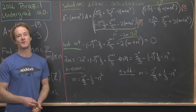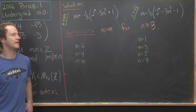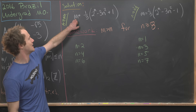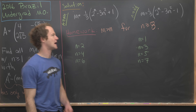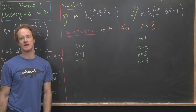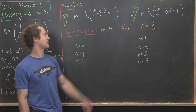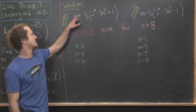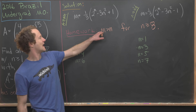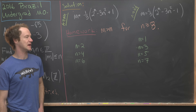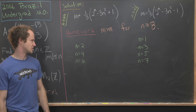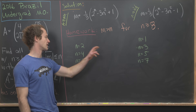Now we're ready to finish. Note that the 2ⁿ term grows much faster than the n² term, so for large n, |m| will exceed n, violating our constraint. As a homework exercise: show that |m| > n for n ≥ 8 in both the even and odd cases. This leaves only n = 1, 2, 3, 4, 5, 6, 7 to check.